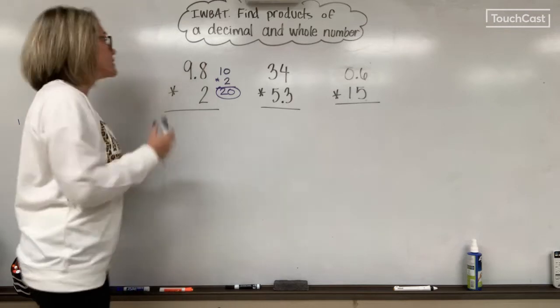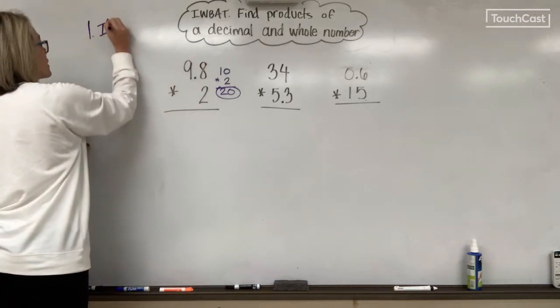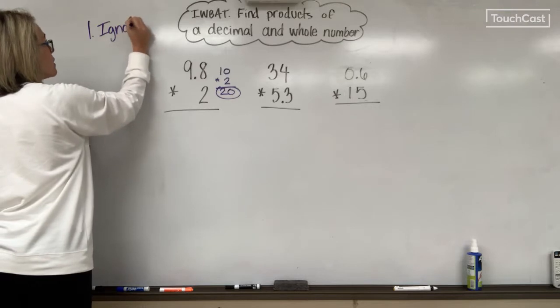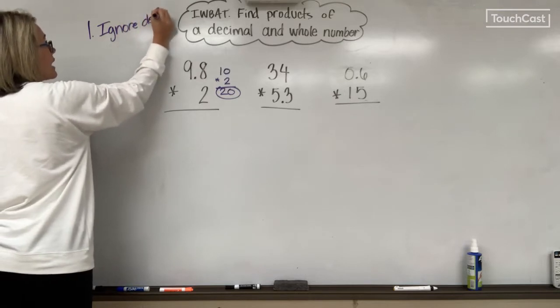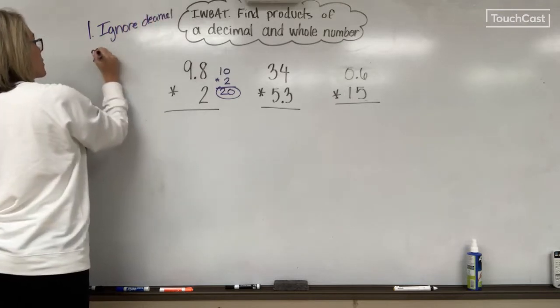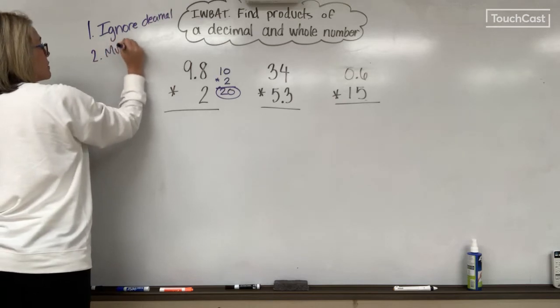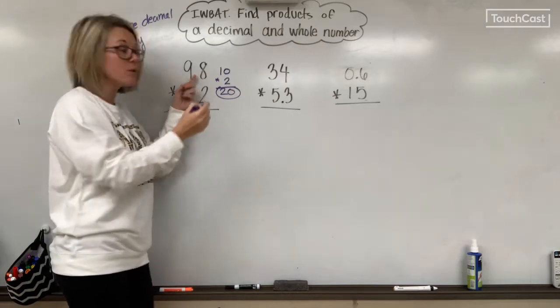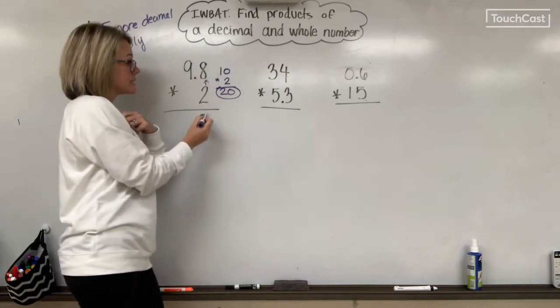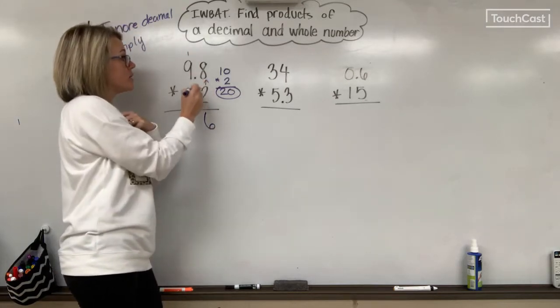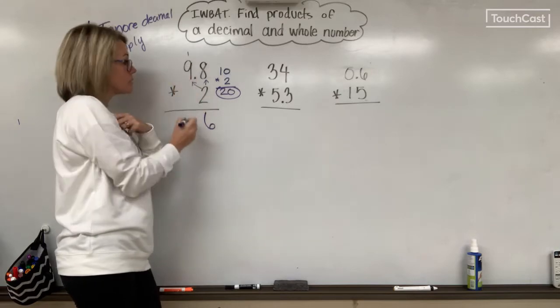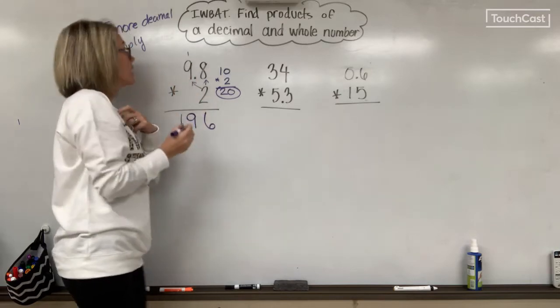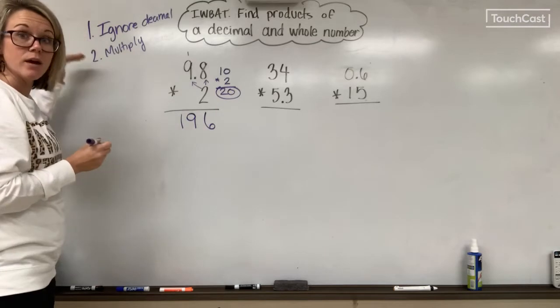Remember the first step: ignore your decimal, act like it's not there, and then you're going to multiply. So ignore your decimal. I'm going to pretend this isn't here and I'm just going to multiply like I normally would. 2 times 8 is 16, carry my 1. 2 times 9 is 18, plus 1 is 19. So I ignore my decimal, I multiply, and then step 3 is to add your decimal back.